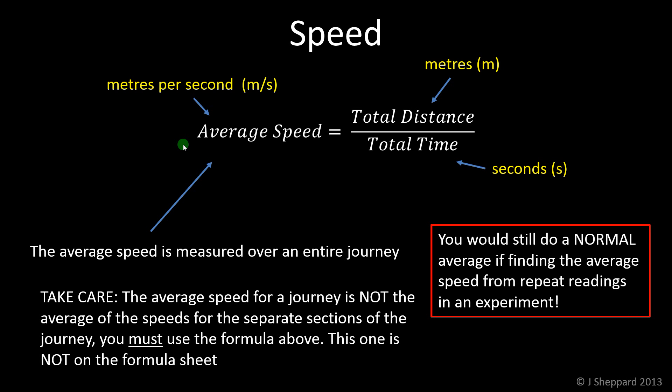Also a point to note that you've got to be slightly careful. If you were doing an experiment where you repeated a set of measurements to get a speed, you can still do a normal average there. We're only doing the average speed in this way if we're talking about the average speed over an entire journey, not the average of several different experiments. So repeat readings in a table, you can still average those. That's not a problem.